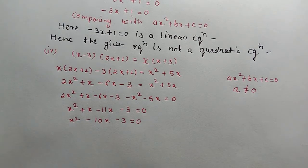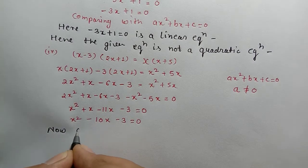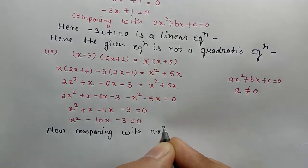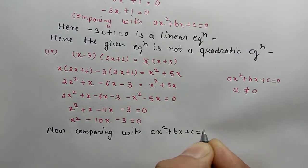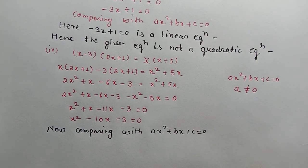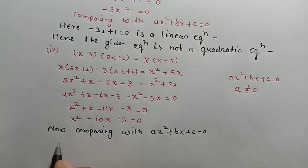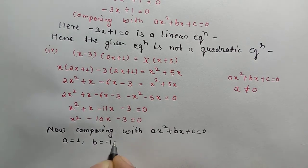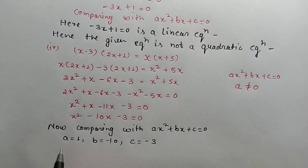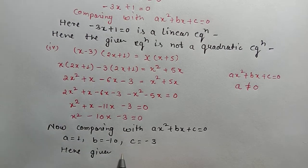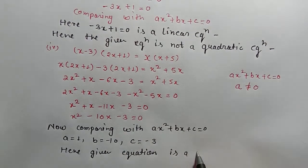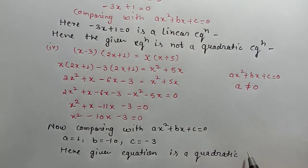Now comparing with ax² + bx + c = 0: here a = 1, which is not equal to zero. So the condition is satisfied. Here a = 1, b = minus 10, and c = minus 3. Hence, the given equation is a quadratic equation.